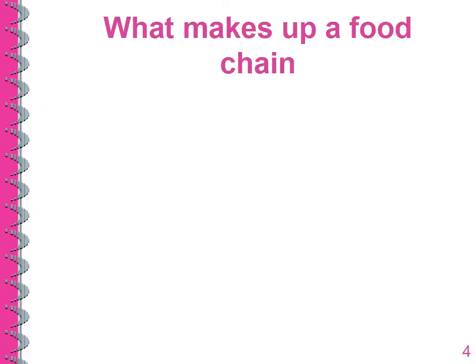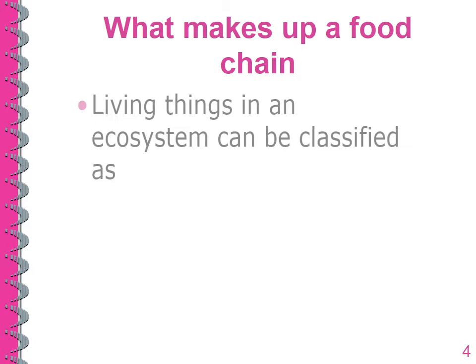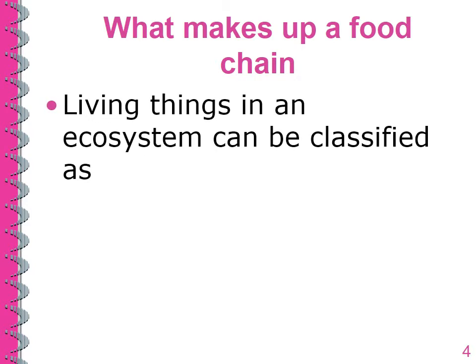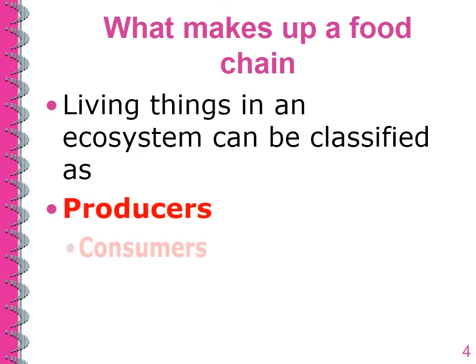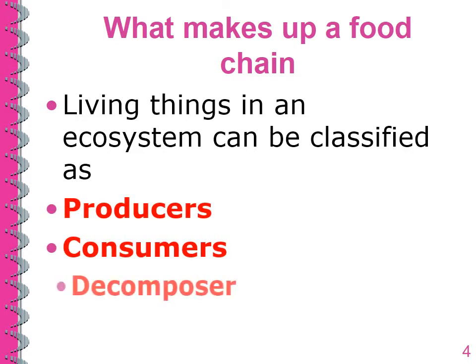Let us see what makes up a food chain. Living things in an ecosystem can be classified as producers, consumers, and decomposers.